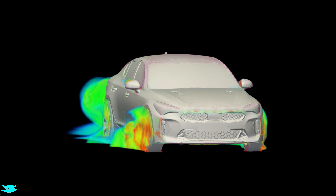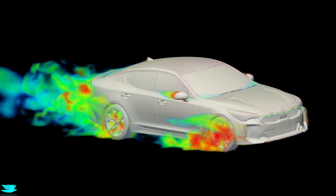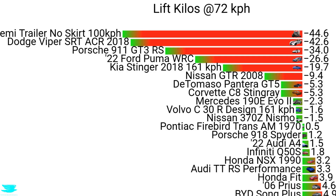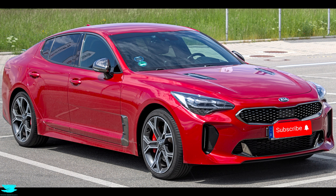This simulation was done at 161 kph, which is more than double the typical speed we simulate cars at. But even factoring that difference in and moving it down to 72 kph, the Kia would still produce around 4 kilos of downforce. Things get even weirder when we look at its general shape. The Kia Stinger's shape from the side looks like a wing — its roof is very curved and its underbody is flat. So naturally, that should result in producing lift, not downforce.